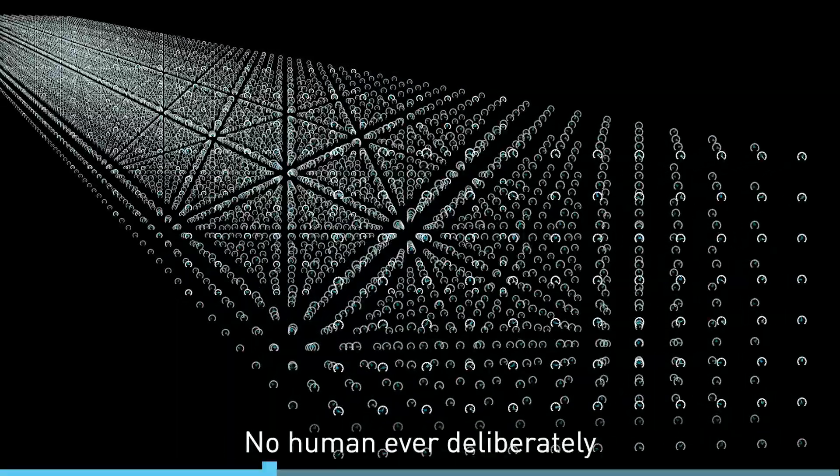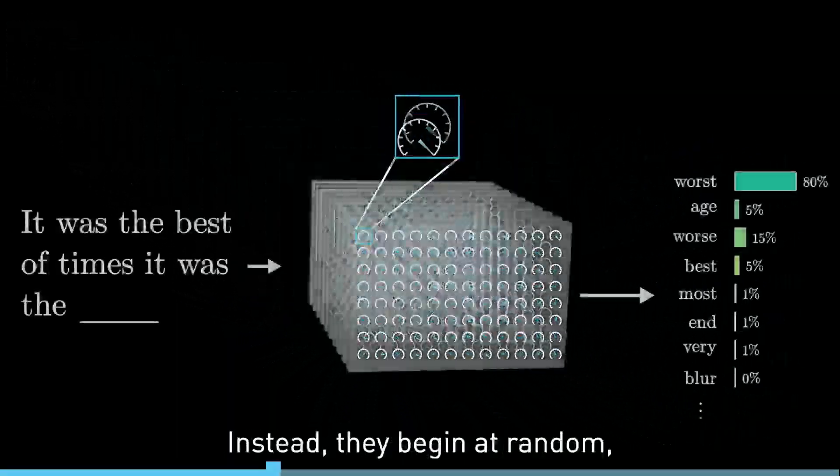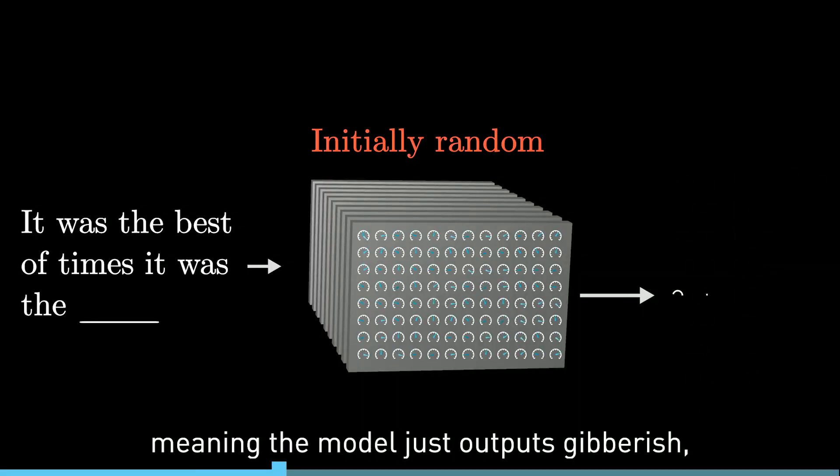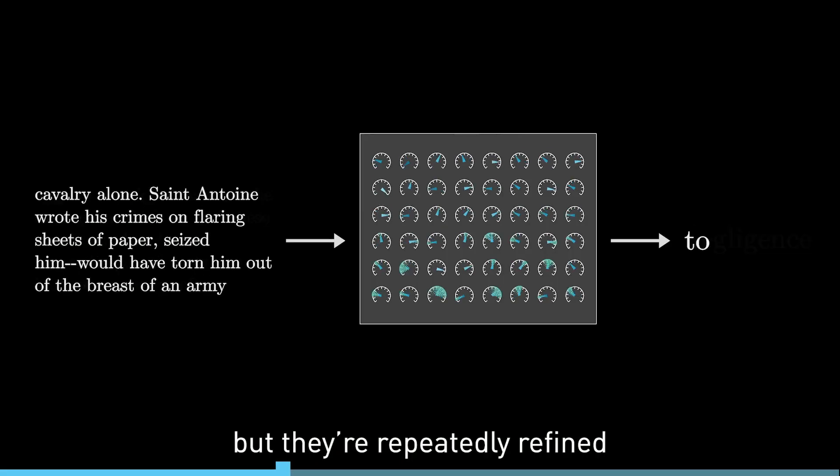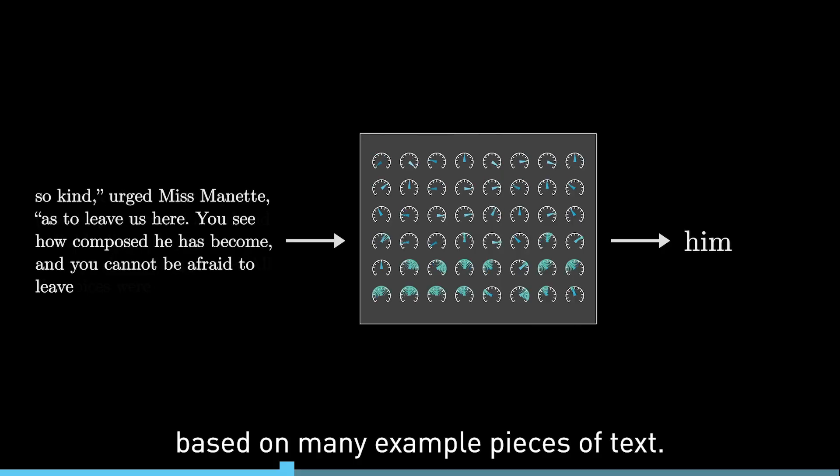No human ever deliberately sets those parameters. Instead, they begin at random, meaning the model just outputs gibberish, but they're repeatedly refined based on many example pieces of text.